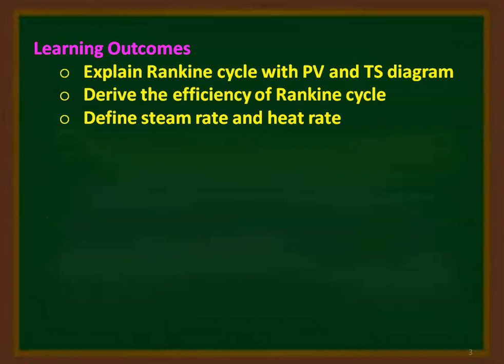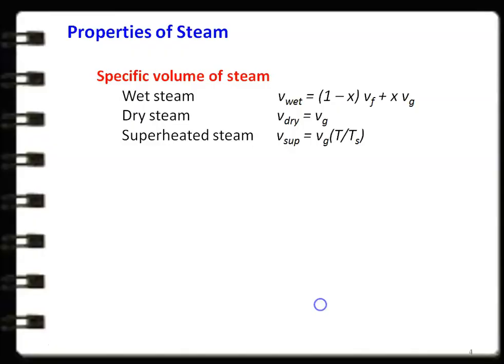The learning outcomes for the students: at the end of the lecture, the student will be able to explain the Rankine cycle with the PV and TS diagram — pressure-volume and temperature-entropy diagram. The student will be able to derive the efficiency of the Rankine cycle. And the student will be able to define the steam rate and the heat rate for the Rankine cycle. Before we enter into the Rankine cycle, we just recall the properties of steam, which is very important for calculating the parameters here.